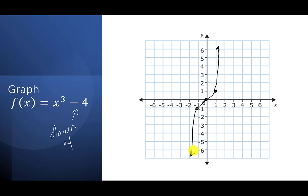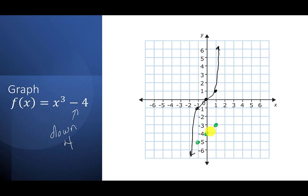The minus 4 says take each point and move down 4. So (0,0) goes down 4, (1,1) goes down to (1,−3), and (−1,−1) goes down to (−1,−5). Connect those dots and the shape looks the same, just moved down. For x² + 2: x² looks like a U, and the plus 2 means go up 2. The base function has (0,0), (1,1), (−1,1). Move each point up 2 and connect the dots — it just shifted up 2 units.